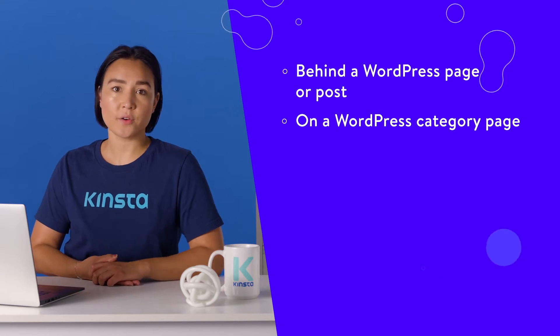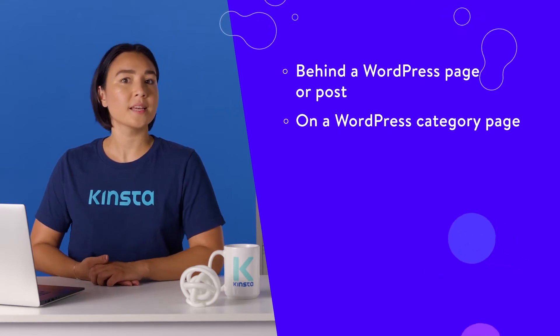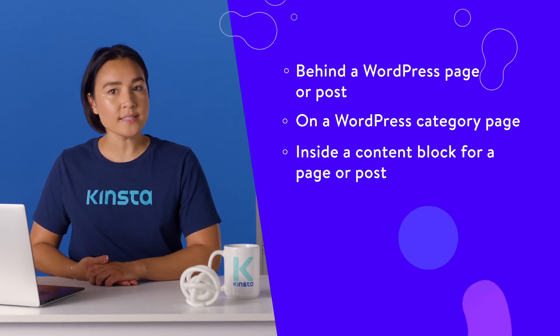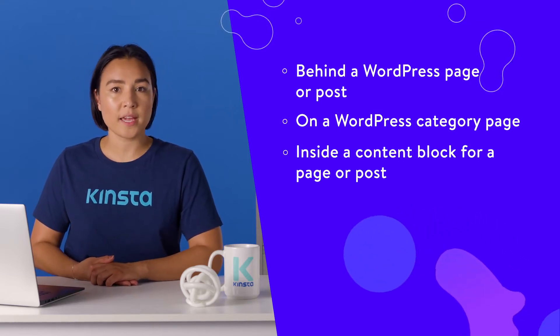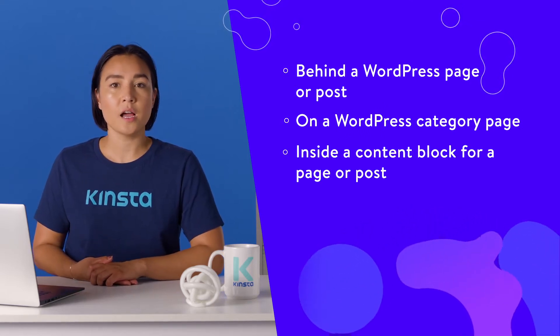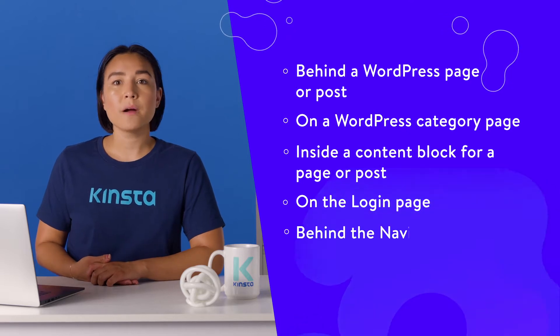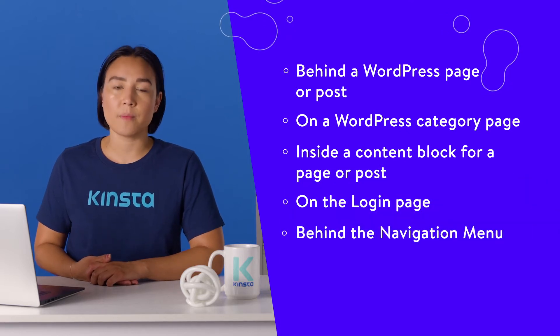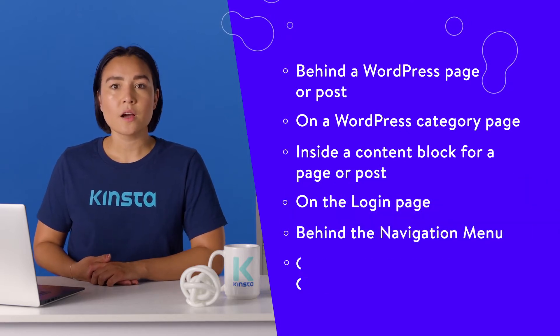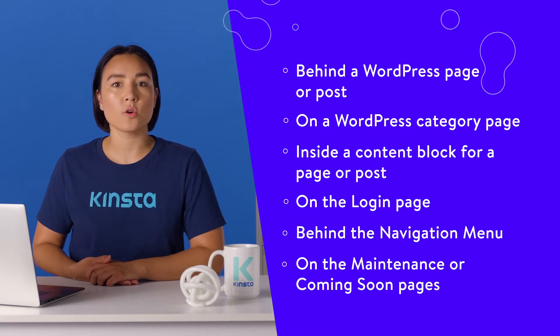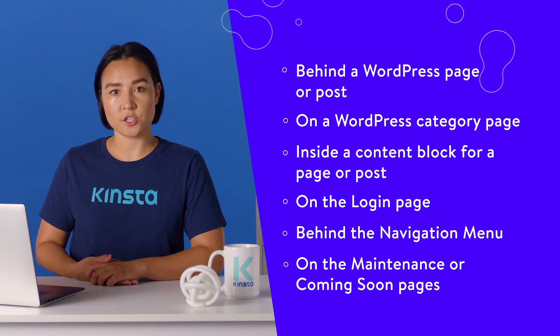Additional background locations include a WordPress category page, inside a content block for a page or post, on the login page, behind the navigation menu, and on the maintenance or coming soon pages.